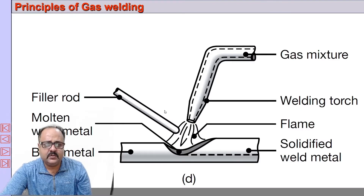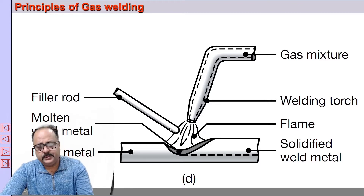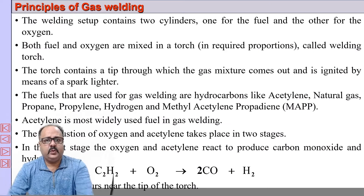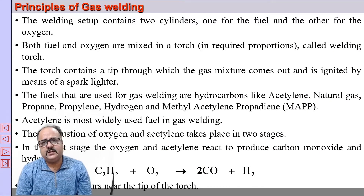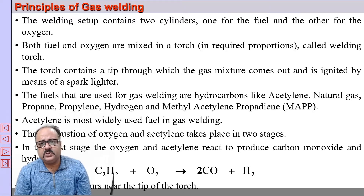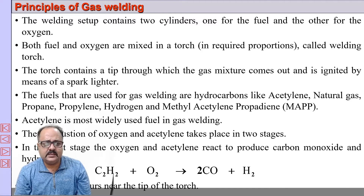Basically, the flame comes out from the torch with the gas mixture, and the filler rod is added separately if required. The setup consists of two cylinders — one fuel gas and one oxygen. Both fuel and oxygen are mixed in the torch in the required proportion, and there is a tip through which the gas mixture comes out and is ignited to form a flame.